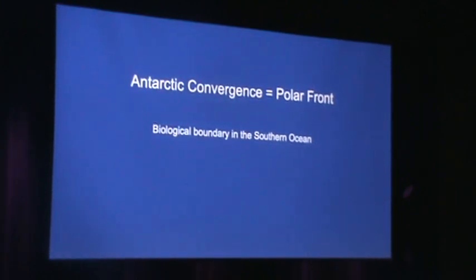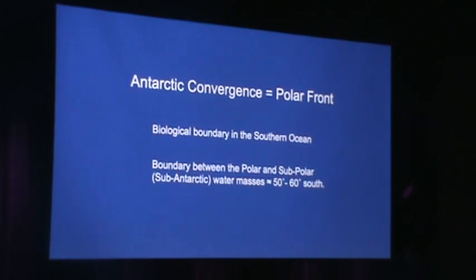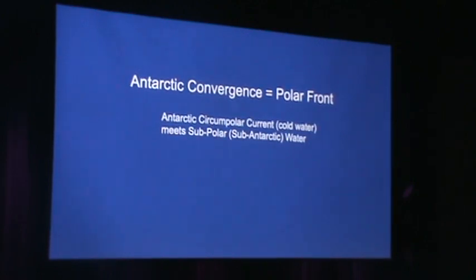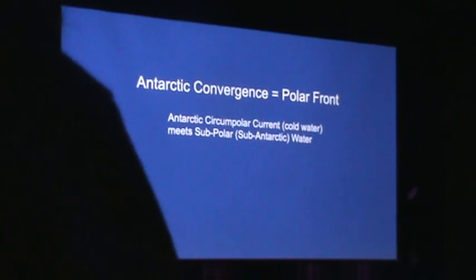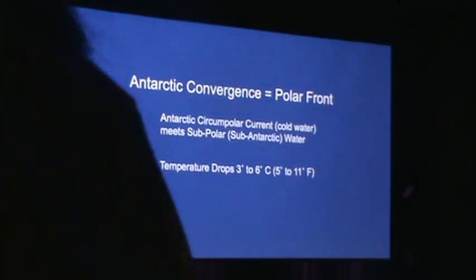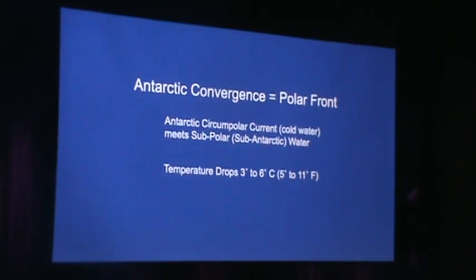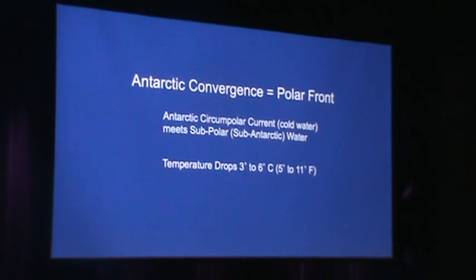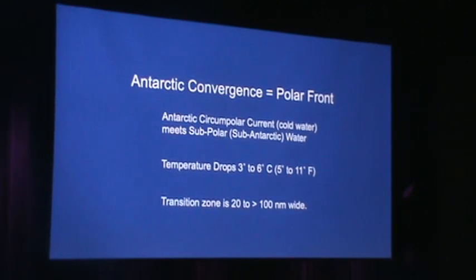The Antarctic convergence, or polar front, is the biological boundary of the Southern Ocean — the boundary between the polar and subpolar waters — changing somewhere between 50 and 60 degrees south latitude. The Antarctic Circumpolar Current's cold water goes clockwise around the continent and meets the subpolar sub-Antarctic waters. It's defined by a temperature drop of 3 to 6 degrees Celsius or 5 to 11 degrees Fahrenheit. South of that border is biologically extremely productive — a transition zone ranging from 20 to 100 nautical miles in width.